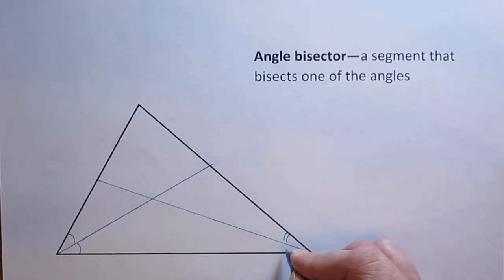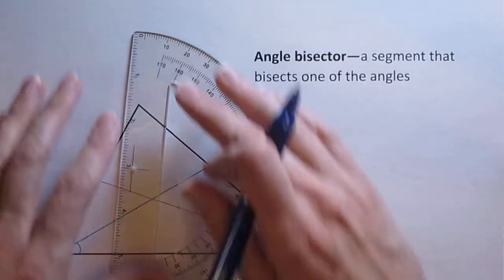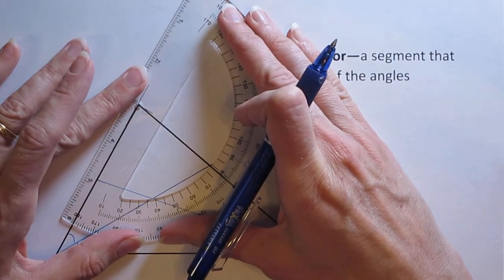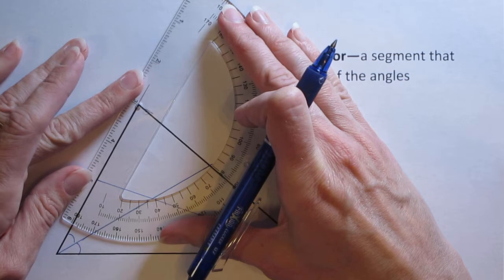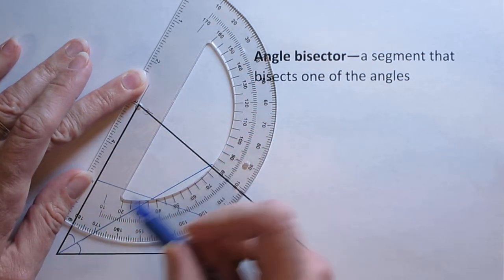Now I've bisected my second angle. Now I'm going to go to the top and measure that top angle. Set that vertex right in the middle of the protractor and make sure that everything lines up along here.